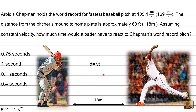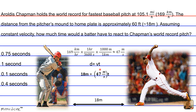Before using this formula, we need to do a dimensional analysis conversion for 169 kilometers per hour into meters per second. So: 169 km/h × (1 hour / 3,600 seconds) — the hour dimensions cancel — × (1,000 meters / 1 kilometer) — the kilometer dimensions cancel — leaving us with approximately 47 meters per second. Now that we've converted our velocity, we can plug our values into the equation: 18 meters = 47 meters per second × T.